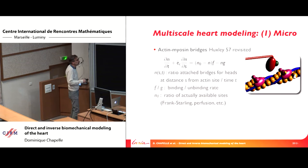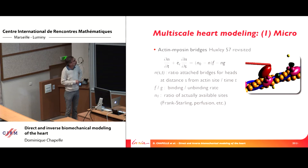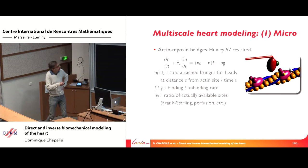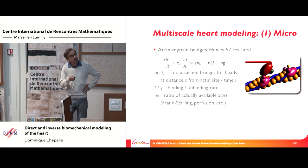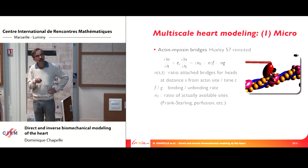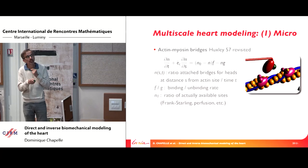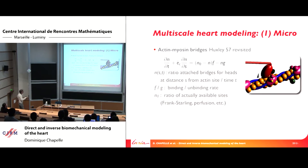The basic type of description we use is inspired from Huxley, who was a great contributor to cardiac modeling. We revisited a model he proposed in 1957 to describe, statistically speaking, the attachment of myosin heads — so-called cross-bridges between the two types of filaments — via the quantity n, which denotes the population of heads located at distance s from the nearest actin site at a given time t, representing the ratio of actually created bridges.